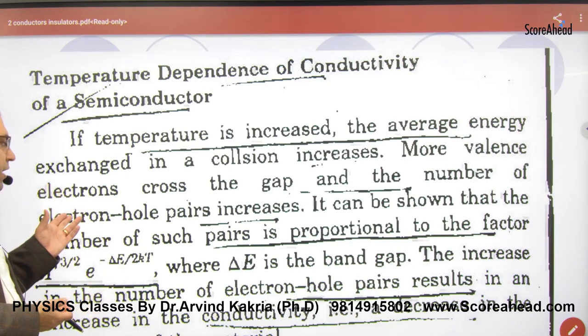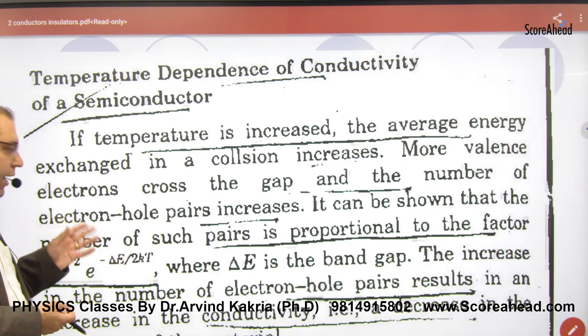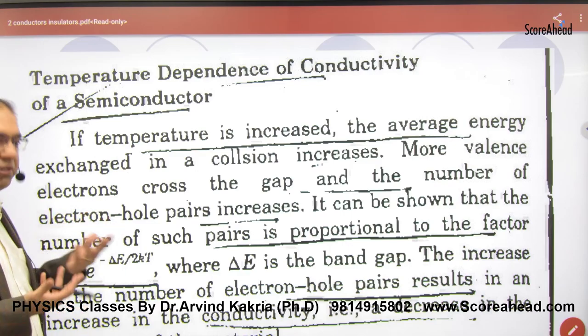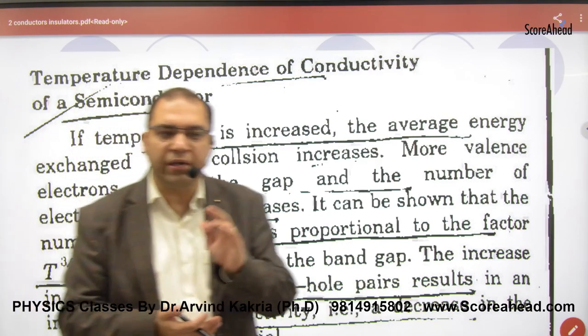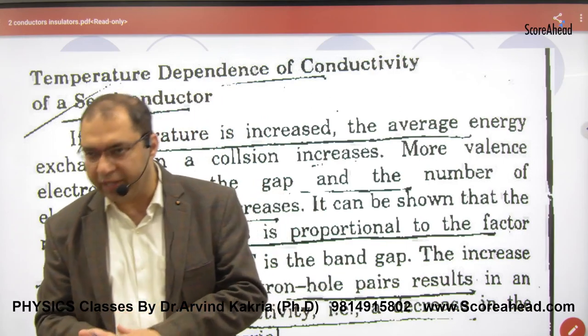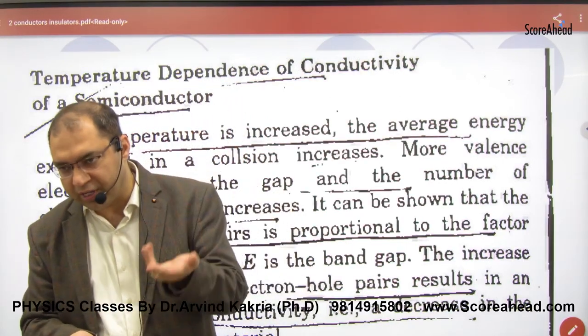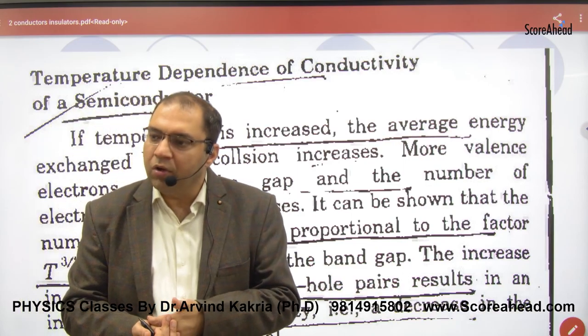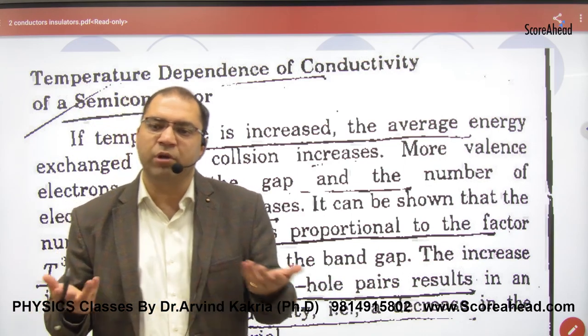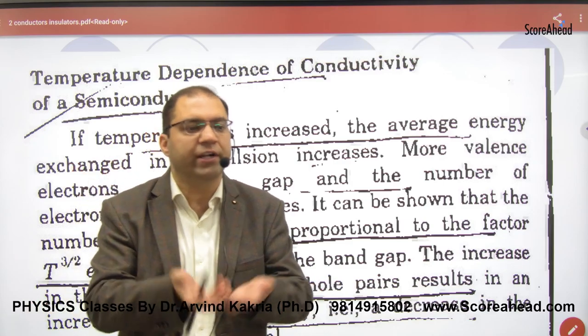More valence electrons cross the gap and the number of electron-hole pairs increases. When you increase the temperature in simple language, then the electrons are released and free, and the number of holes also increases and the number of electrons also increases.